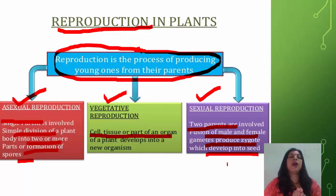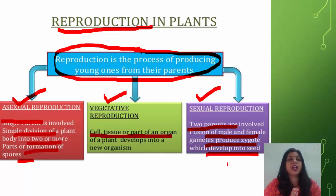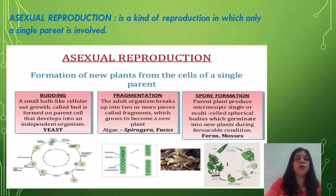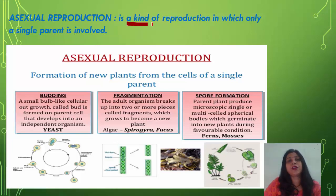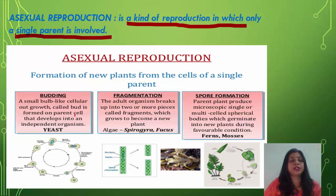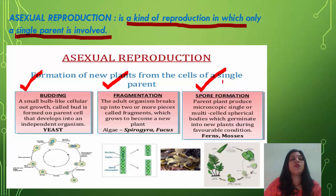In Part 1 we are going to study asexual reproduction and vegetative reproduction, which is also known as vegetative propagation. Asexual reproduction is a kind of reproduction in which only a single parent is involved for the production of a new organism. It is of three types: budding, fragmentation, and spore formation.